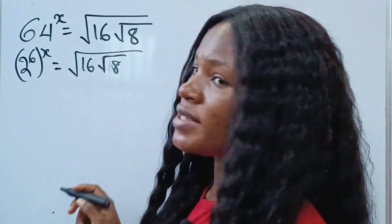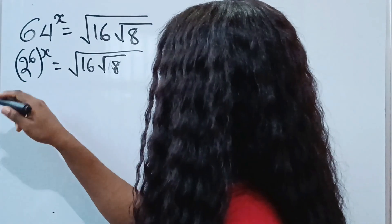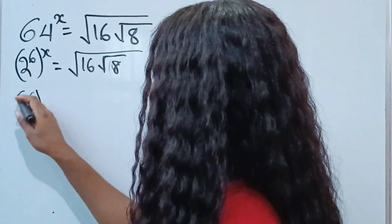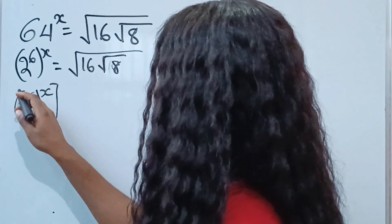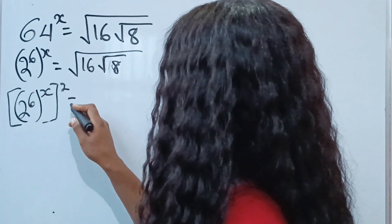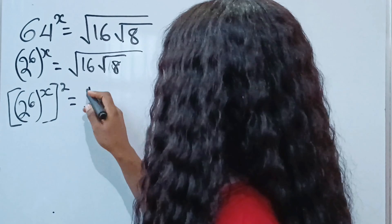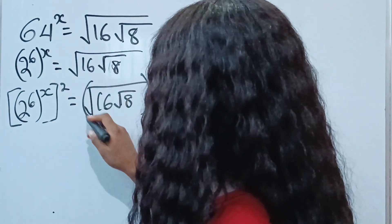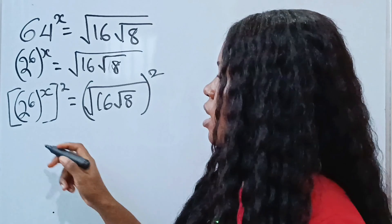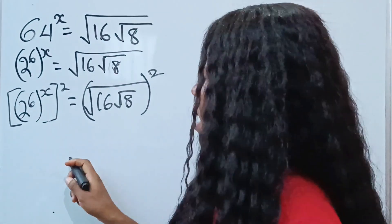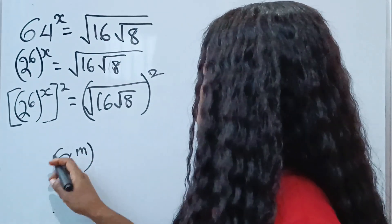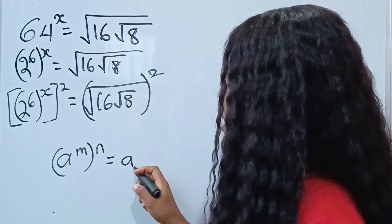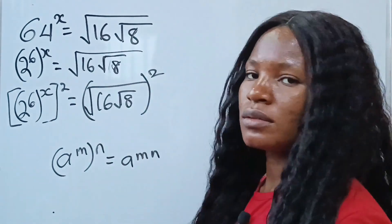Now let's square both sides of this equation. If we do that, we are going to have 2 to the power of 6 raised to the power of x, everything squared, is equal to square root of 16 root 8 raised to the power of 2. When you have 8 to the power of m raised to the power of n, this can be written as 8 to the power of m times n.